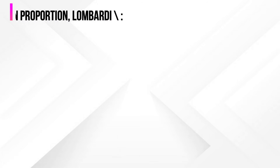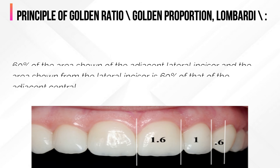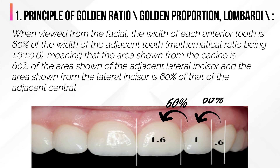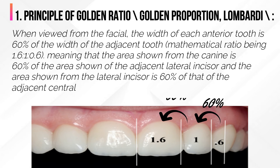The first one is the golden proportion by Lombardi, which states that when viewed from the facial aspect, the width of each anterior tooth is 60% of the width of the adjacent tooth — a mathematical ratio of 1.6 to 1 to 0.6. The area shown from the canine is 60% of the area shown of the adjacent lateral incisor, and the area shown from the lateral incisor is 60% of that of the adjacent central, as shown by the figure below.